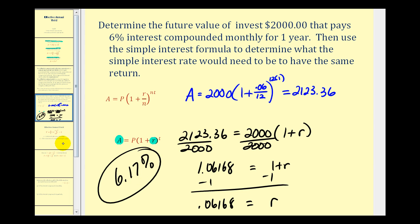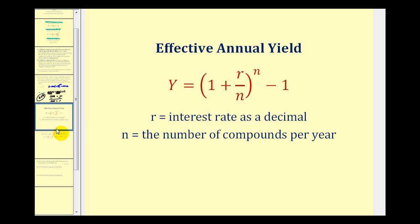Now let's take a look at the shortcut formula to determine effective annual yield. Here's the formula: Y is the effective annual rate, R is the interest rate as a decimal, and N is the number of compounds per year.